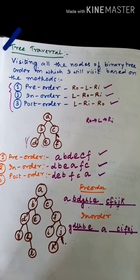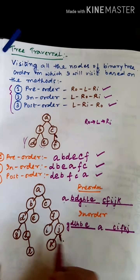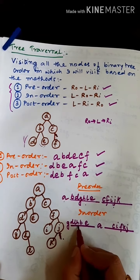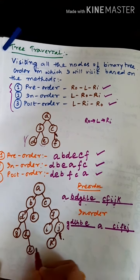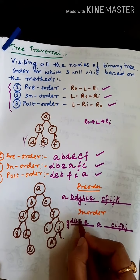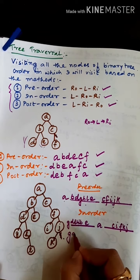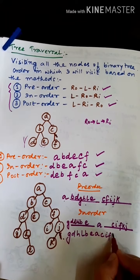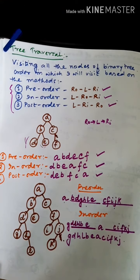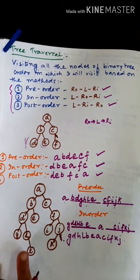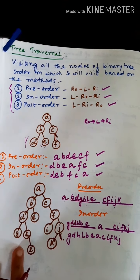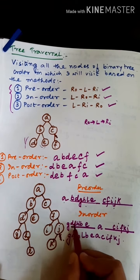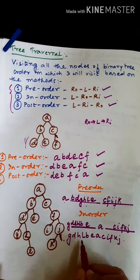The in-order traversal result is G, D, H, L, B, E, A, C, I, F, K, J. Note: a small mistake was made earlier — L is the right child of H, not the left child. So in in-order, first the root H is in the middle, and L is on the right side, not left.